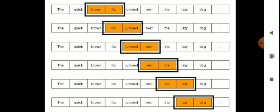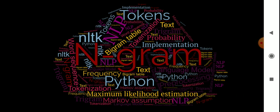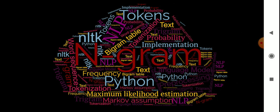In n-gram language models, we predict the probability of a given n-gram within any sequence of words in a language. A good n-gram model can predict the next word in a sentence — that is, the value of p(word | previous words).